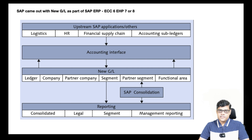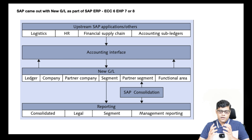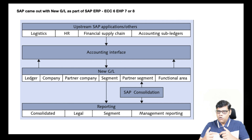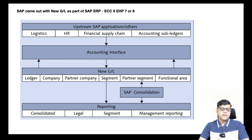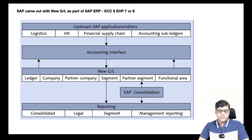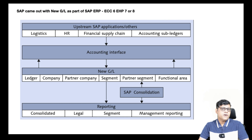If you check this image, these are the ECC6 features where you can use EHP7 or EHP8. We have different applications: logistics, FSCM, different sub-ledgers, all connected with the accounting interface. FI is connected with logistics because we are doing procurement and sales. It is also connected with other sub-ledgers like receivables, payables, and assets - various activities are done in the finance books of accounts.